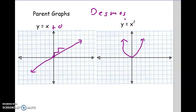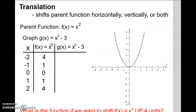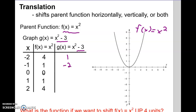Now we're going to modify the parent functions, focusing on x squared. What happens if we take x squared and put a minus 3 on the end? We have the original parent f of x equals x squared. For g of x equals x squared minus 3, all that happens is you square the x values and then subtract 3. So 0 squared minus 3 is negative 3, 1 squared minus 3 is negative 2, 2 squared minus 3 is 1. It's whatever x squared was, but now 3 less.